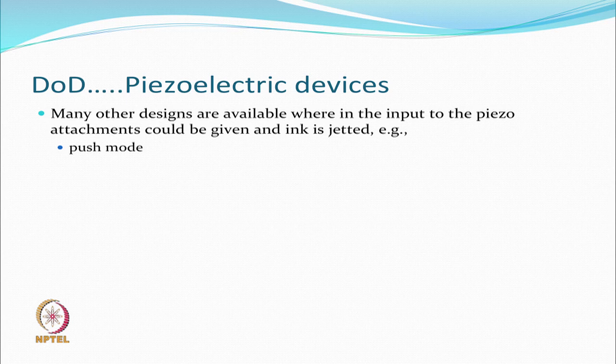In conventional printing, unless you apply a squeegee, the paste does not move. Here the viscosity of inkjet inks is much less compared to conventional printing, but there is still enough viscosity and surface tension that the drop will not come out unless pushed. Jetting of the ink can be done by the push method, where the poling direction and the electric field direction are the same — generally a push mode.